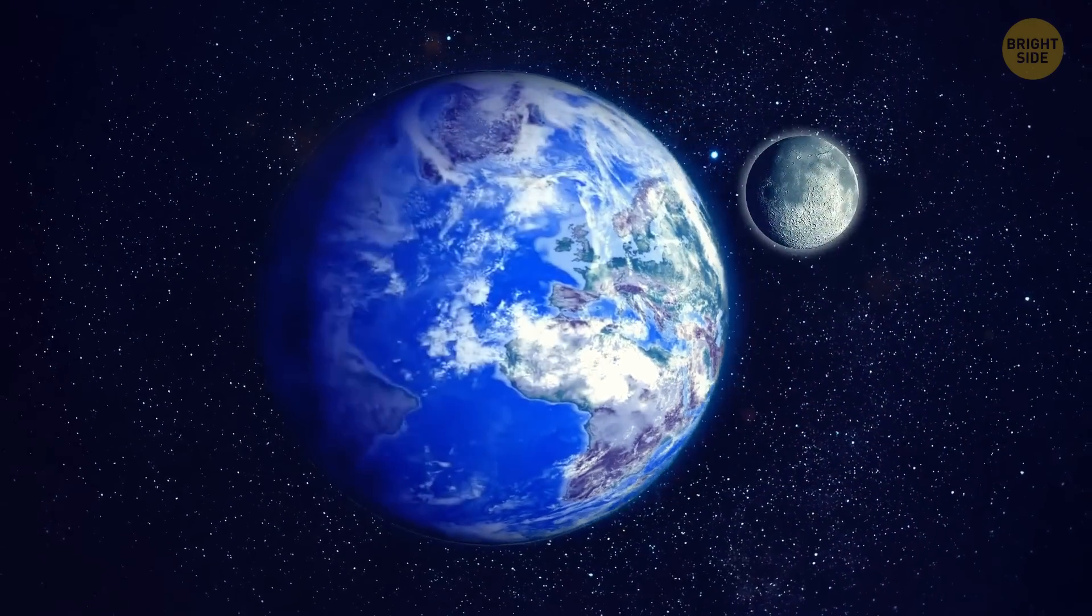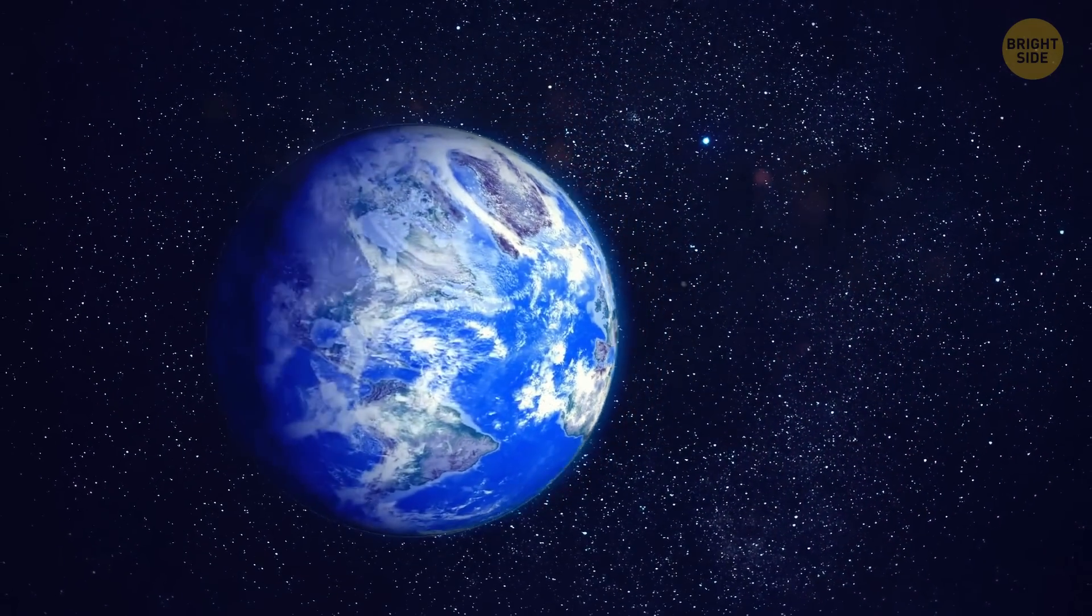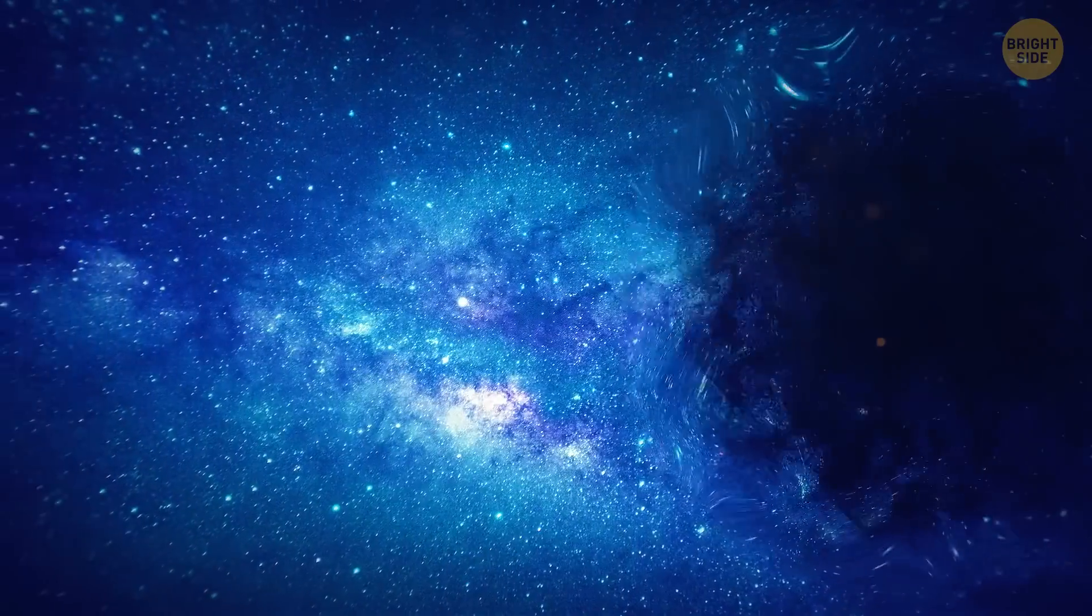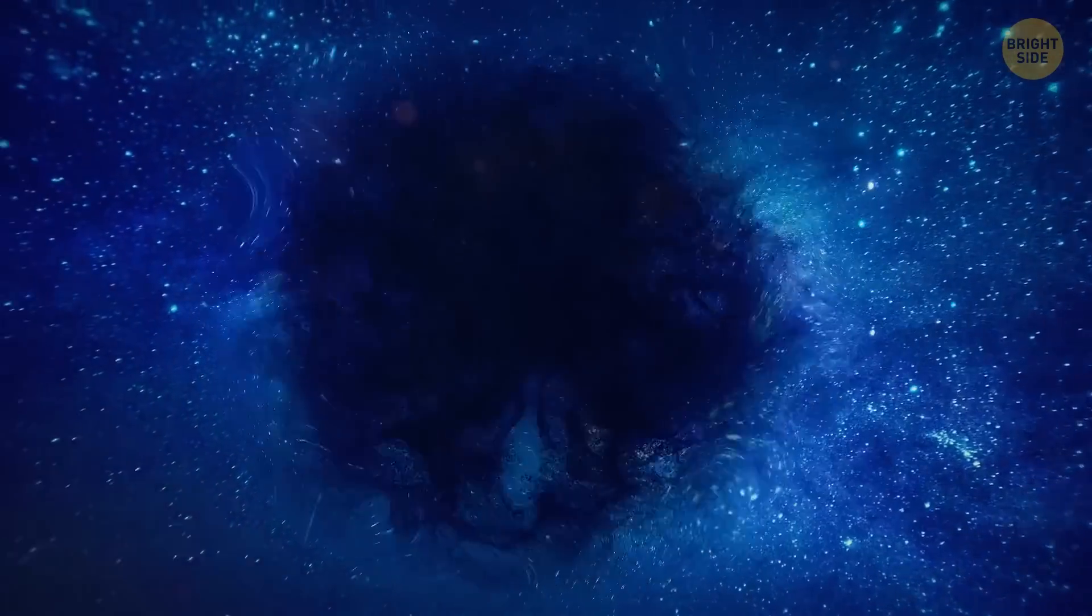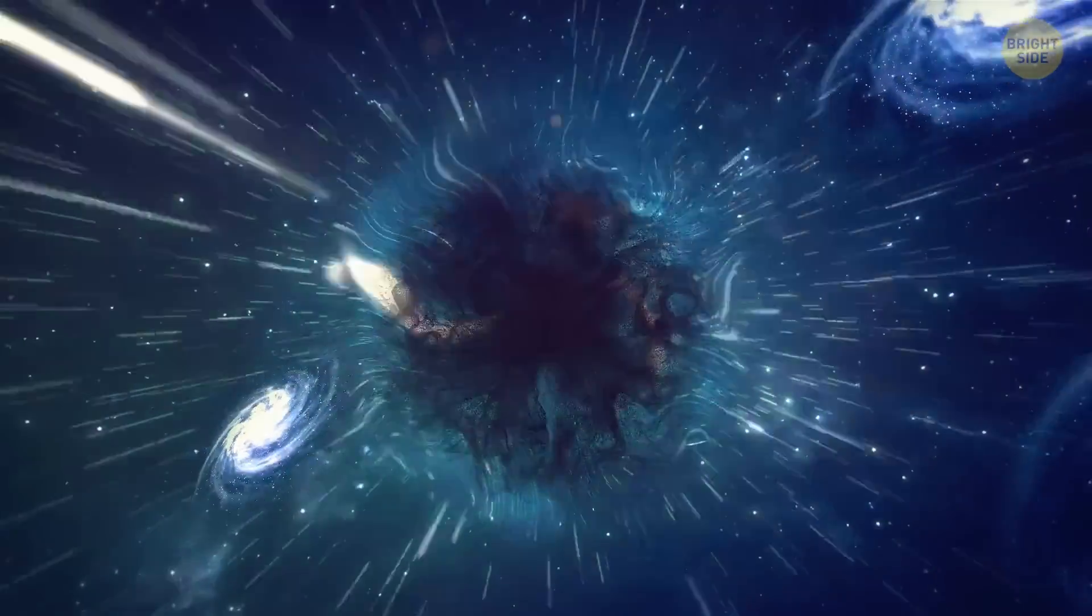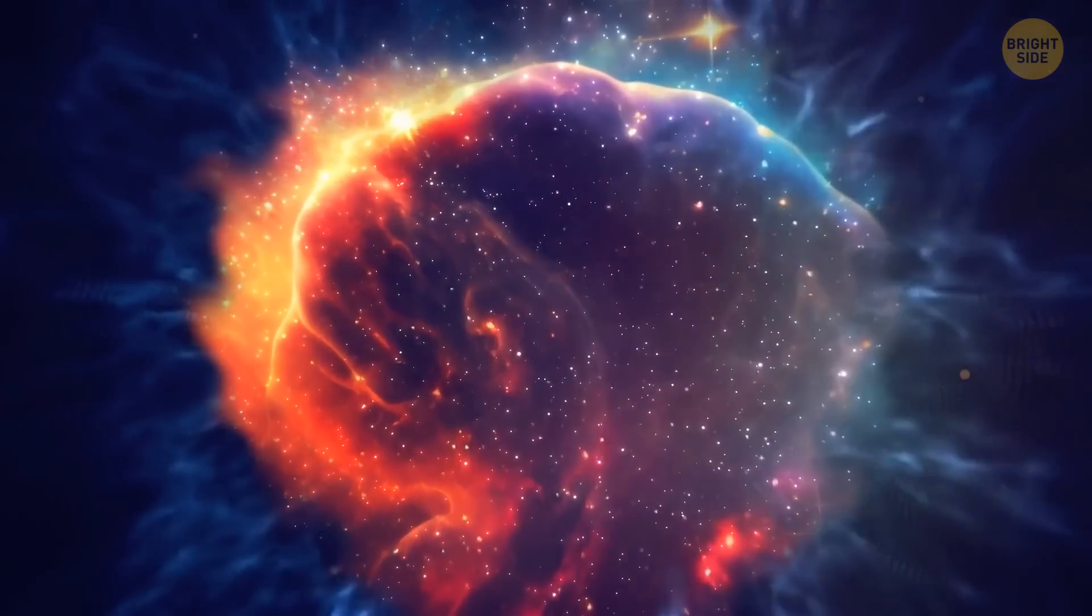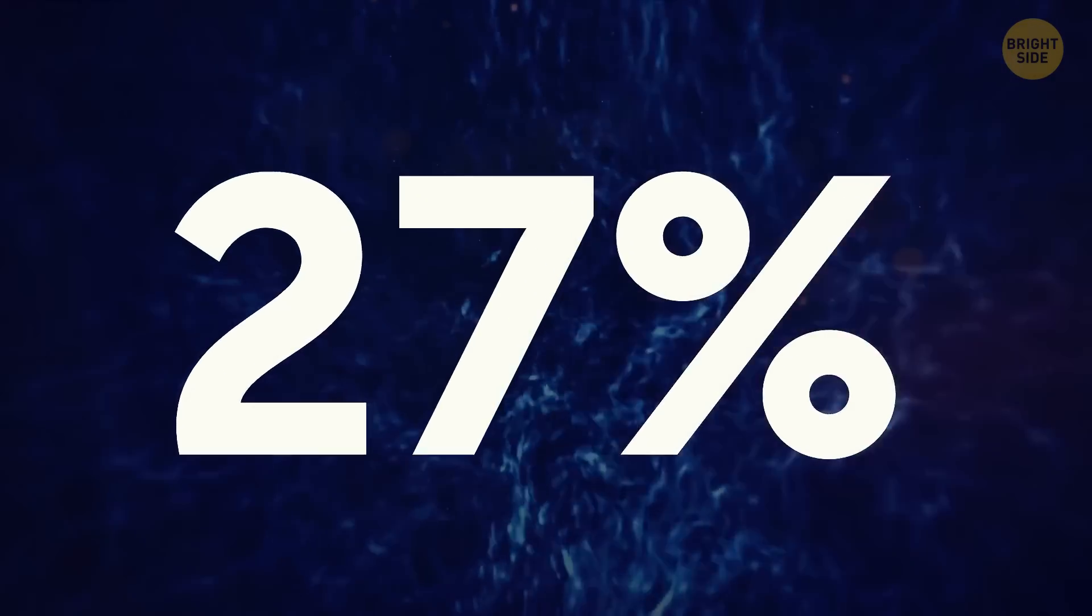If the moon was invisible, we would still suspect that it exists somewhere because its gravity affects the tides on Earth. This is also the case with dark matter. Its gravity influences the motion of galaxies and other cosmic objects. In fact, dark matter makes up a huge chunk of the universe. About 27% of it.